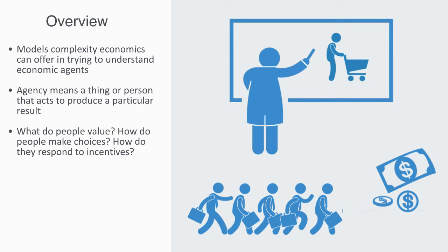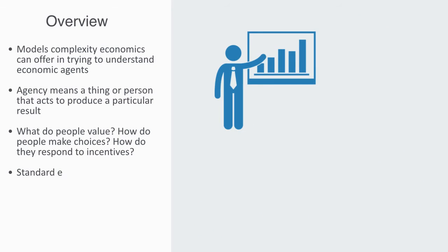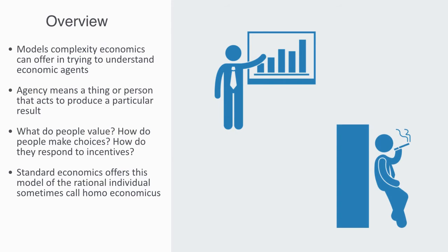and how do they respond to incentives. In this video, we'll be exploring two very different models given to capture this. We'll talk about how standard economics offers this model of the rational individual, sometimes called homo economicus, and will draw upon the new area of economics called behavioral economics,